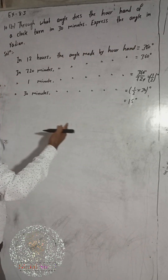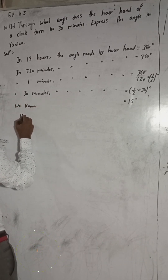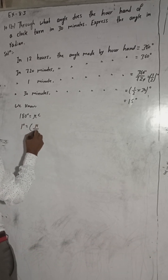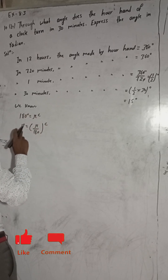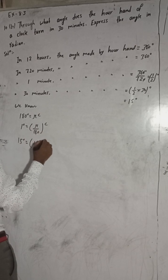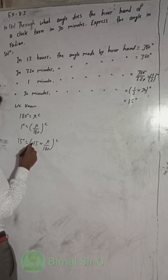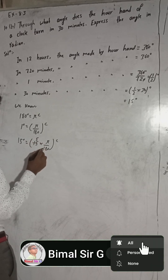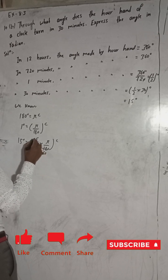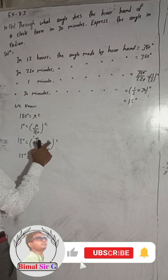Now express the angle in radians — we have to convert 15 degrees into radians. We know that 180 degrees equals pi radians. So 1 degree equals pi divided by 180 radians. Therefore, 15 degrees equals 15 multiplied by pi/180. Dividing 15 and 180 by 3 gives 5 and 60, so 15 degrees equals pi by 12 radians.